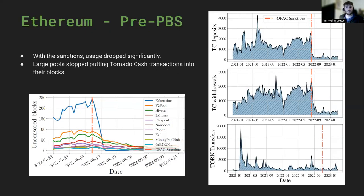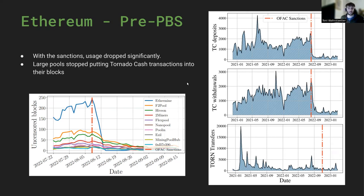We split the paper in different parts. First, we focus on pre-PBS times when there was no proof of stake and we didn't have proposer-builder separation. Miners were the only entities involved in block construction. And when the Tornado Cash contracts were sanctioned, we could already see many miners obeying the sanction and stopping accepting Tornado Cash transactions.